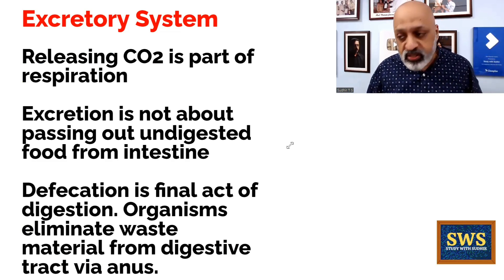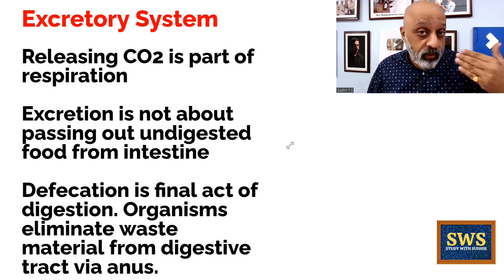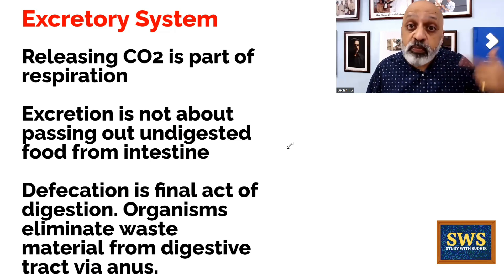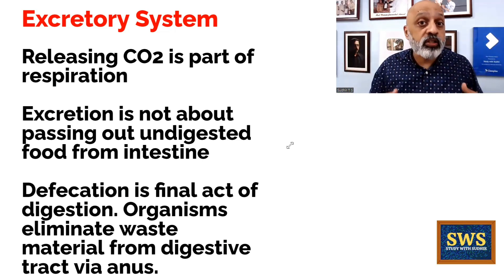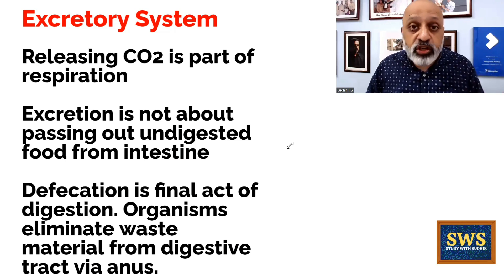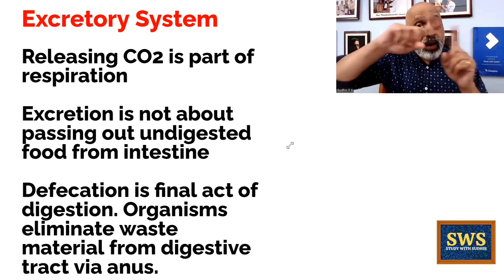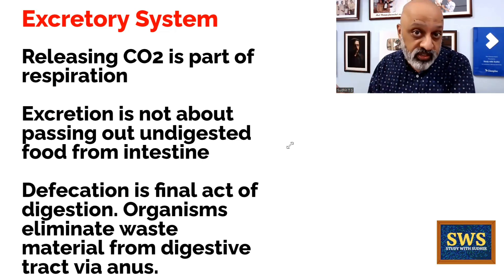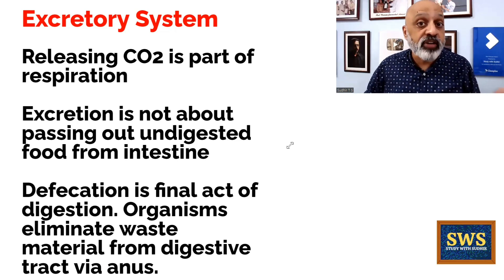When we talk about the excretory system, we are talking about the role of the kidneys, the lungs, and the skin — but there is an important distinction. For example, when we are breathing out, this is part of the respiratory system, not the excretory system. Just because you are expelling carbon dioxide does not make it part of the excretory system. Similarly, excretion is not about passing out undigested food from the intestine. Defecation is the final act of digestion — organisms eliminate waste material from the digestive tract via the anus. So the excretory system is more or less like a urinary system, specifically speaking.